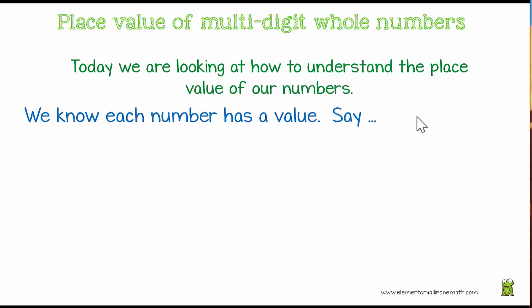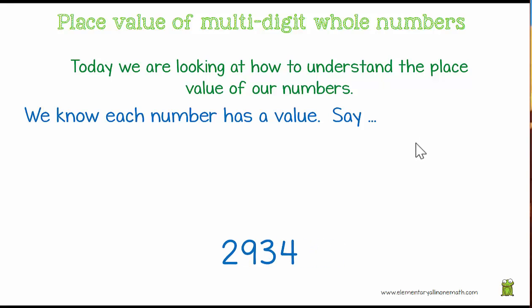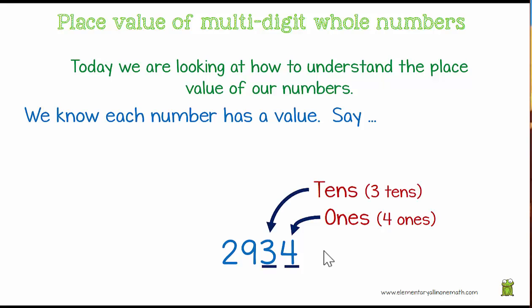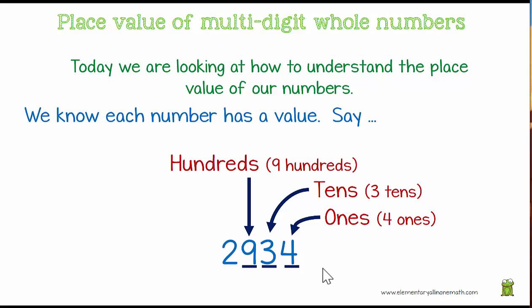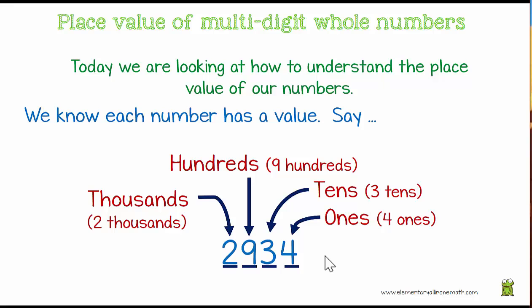We know that each number has a value. Say we pick the number 2,934. We look at each of these digits and know that they each have a value. We start with our 1s. This 4 is in the 1s column so we have four 1s. The 3 is in the 10s column so we have three 10s. The 9 is in the 100s column so we have nine 100s. And the 2 is in the thousands column so we have 2,000. So: the 2 is 2,000; the 9 is 900; the 3 is 30; and the 4 is 4.